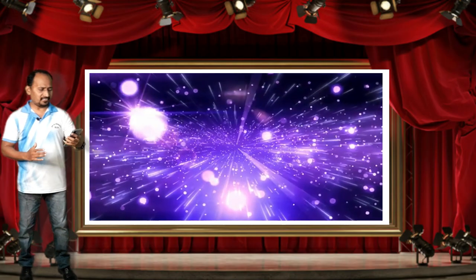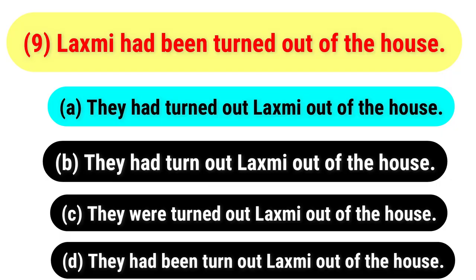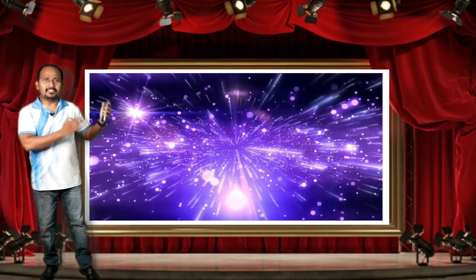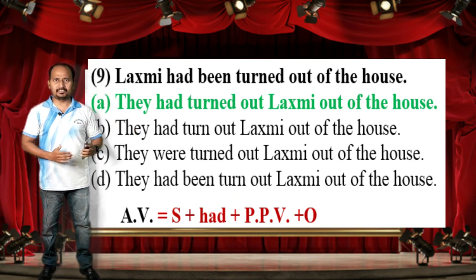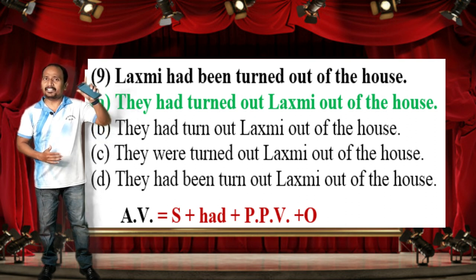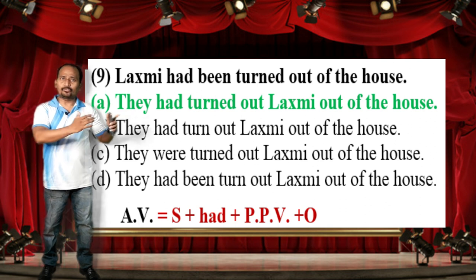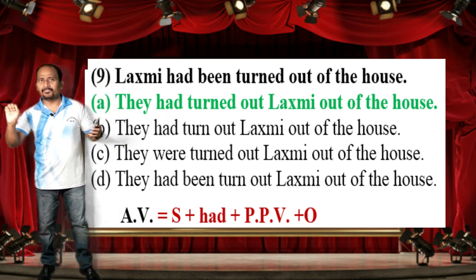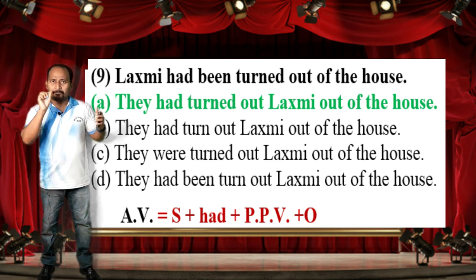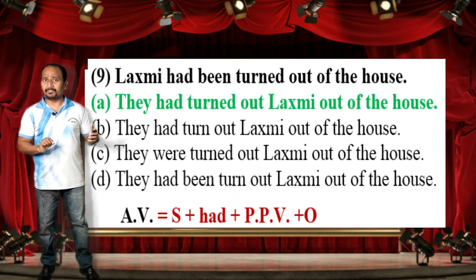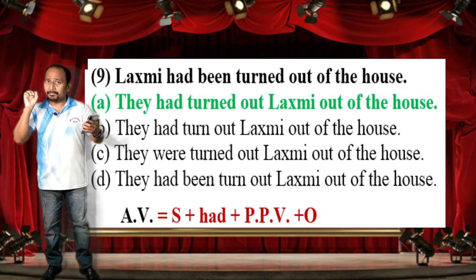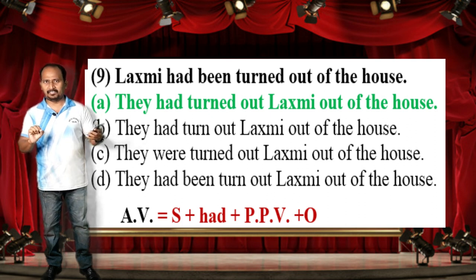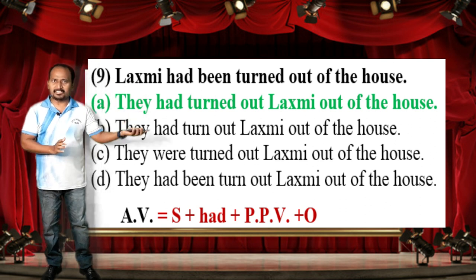The correct answer is option A: 'They had turned out Lakshmi out of the house.' The given sentence is already in passive voice, so you have to change it to active voice. The passive voice sentence is in past perfect tense, so the active voice uses the past perfect formula: Subject + had + PPB + Object.